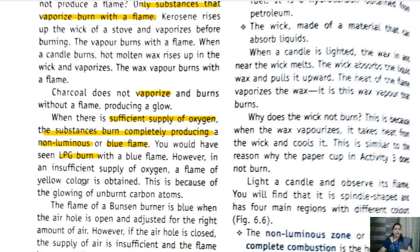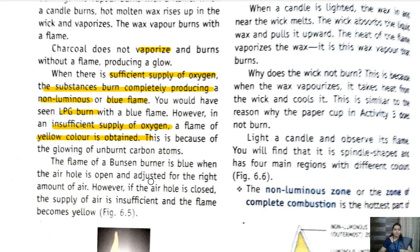When there is complete blue, the supply of oxygen is sufficient and the flame is blue, which is non-luminous. Non-luminous means complete oxygen supply, as seen in LPG burning. However, in an insufficient supply of oxygen, a yellow color flame is obtained. The yellow color appears because of the burning of unburnt carbon particles.